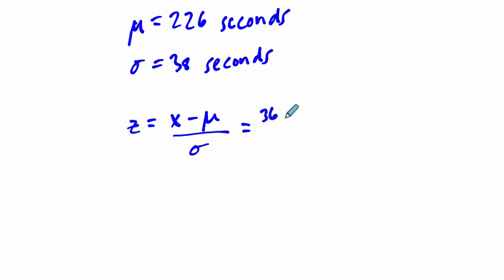So we do 360, that's her data point x, how long she waited, minus 226, over 38. When you do this, you get about 3.53. Then you could say yes, this is unusual because her wait time is over 3 standard deviations from the mean, so it's outside of the confidence interval. That's another way of looking at it.